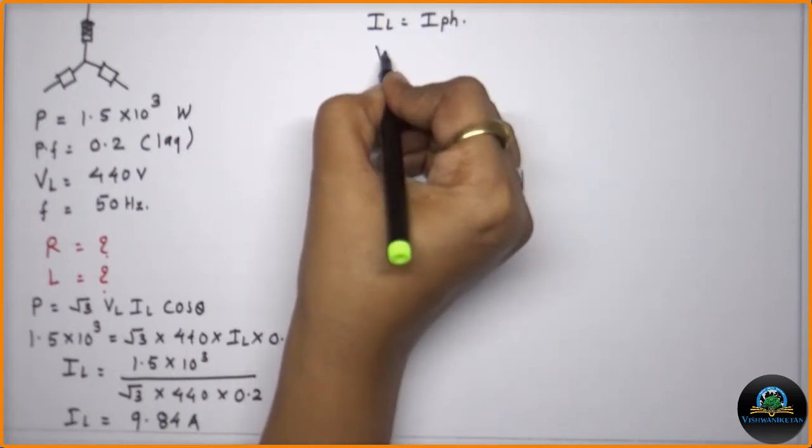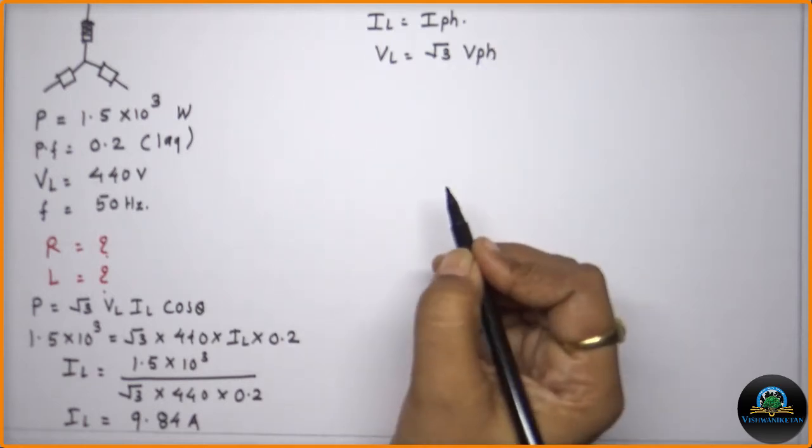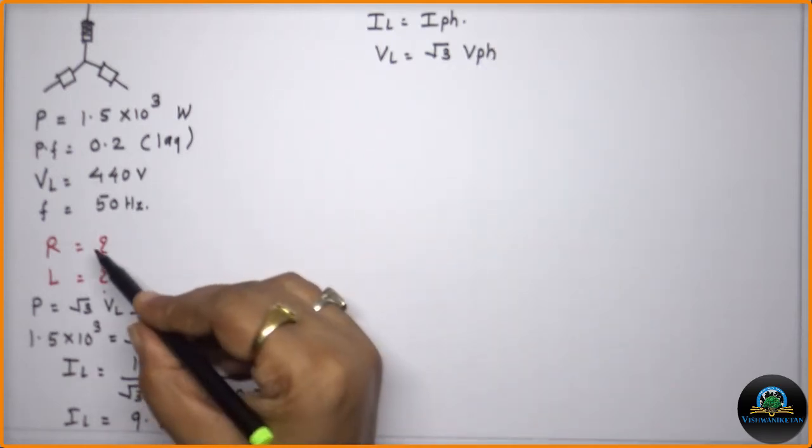And VL is equal to root 3 times VPH. Now coming back to the question which is asked to us, they are asking us to calculate the value of R and L.